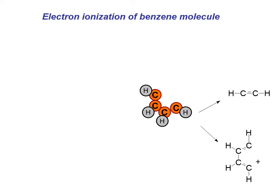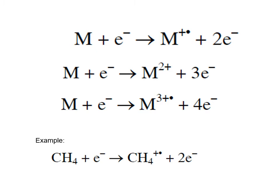So we have not only one positive ion but fragments as well. Let's look at this process in detail. When an electron strikes a molecule, what can happen?